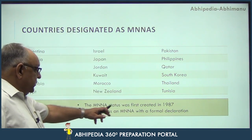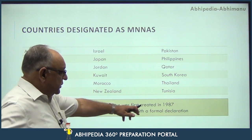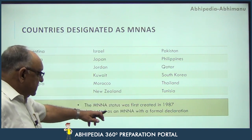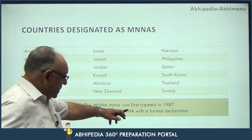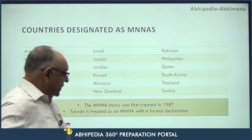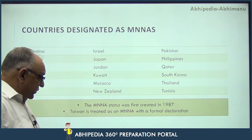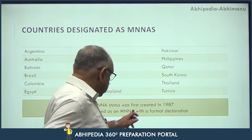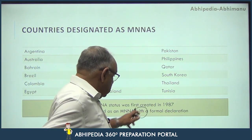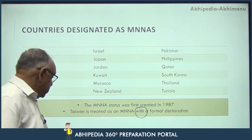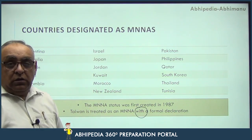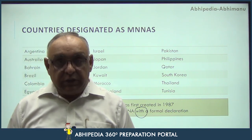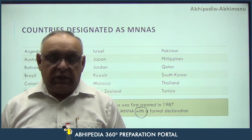The MNNA status was first created in 1987. Taiwan is treated as an MNNA without a formal declaration. Taiwan is considered a Major Non-NATO Ally country, but without a formal declaration.